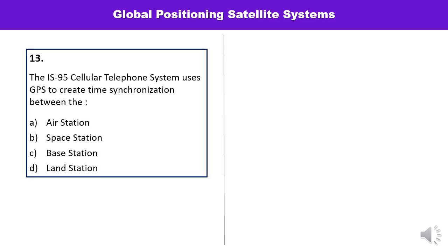Question number thirteen: In IS-95 cellular telephone system, GPS is used to create time synchronization between what — air stations, space stations, base stations, or land stations? The correct answer is B — between the base stations.